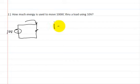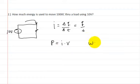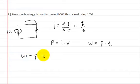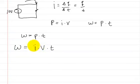We know that current equals the change in coulombs divided by the change in time, which simplifies to coulombs divided by time. Power equals current times voltage, and energy, or work, equals power times time. We're going to use these three formulas and manipulate them to solve for energy. So work equals power times time, and we replace power with current times voltage, giving energy equals current times voltage times time.